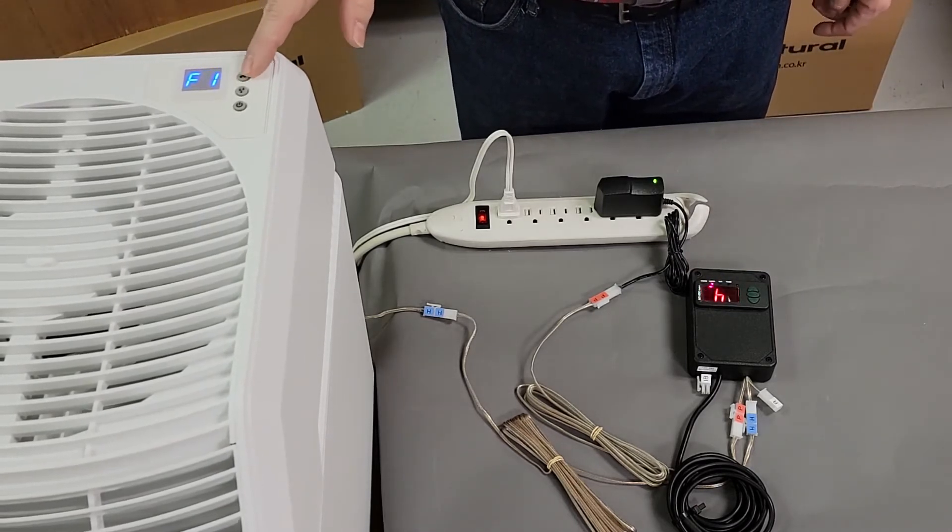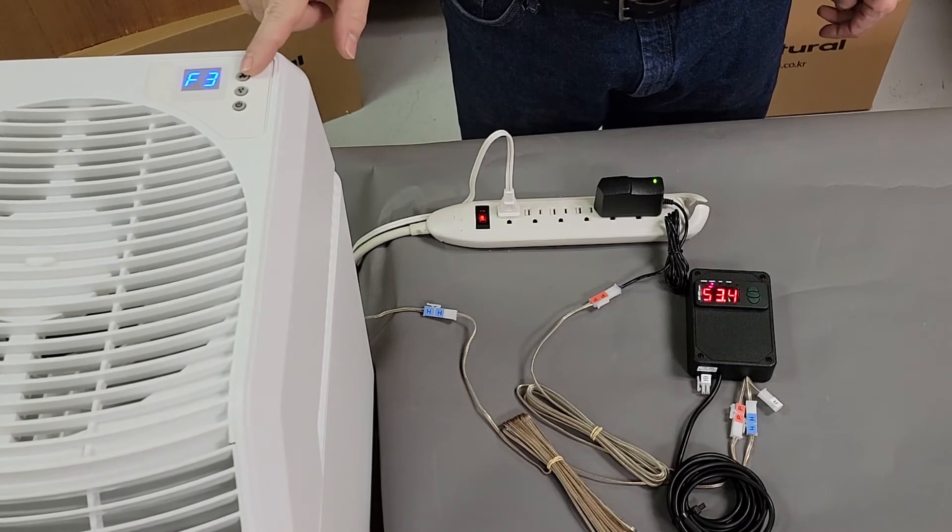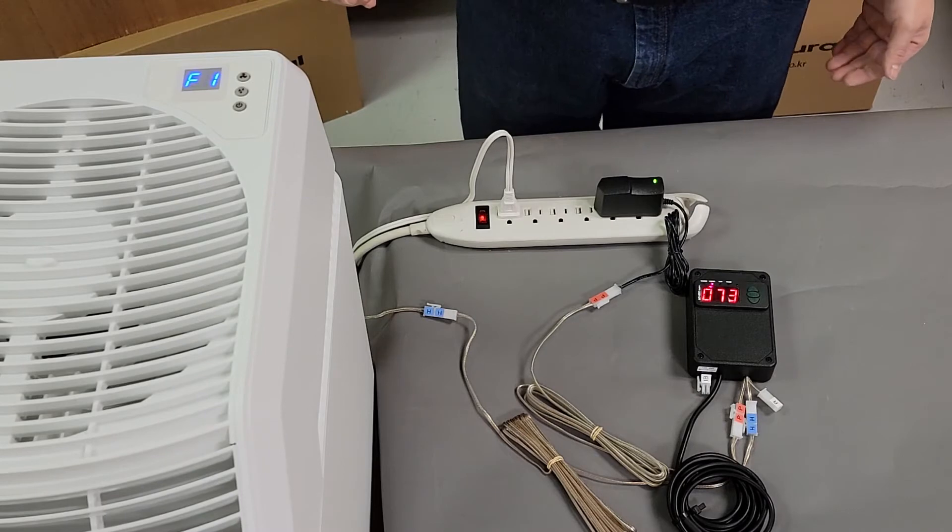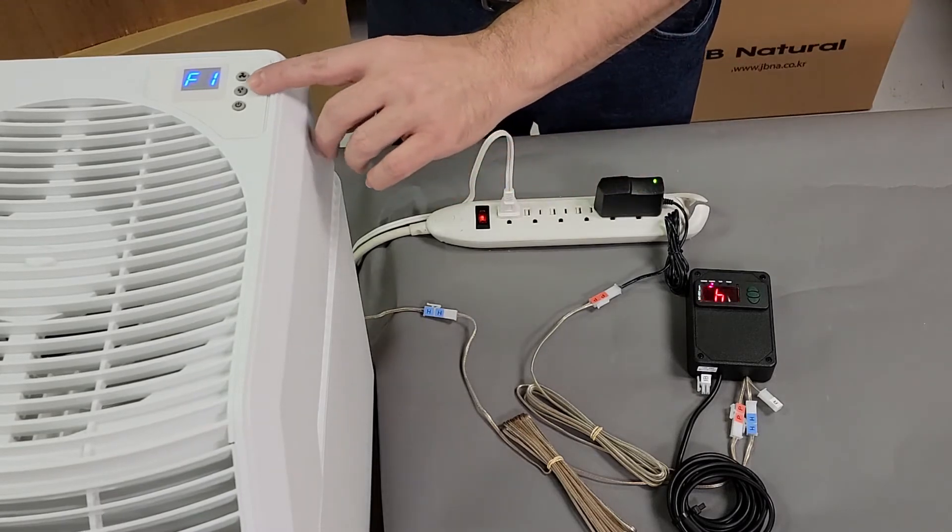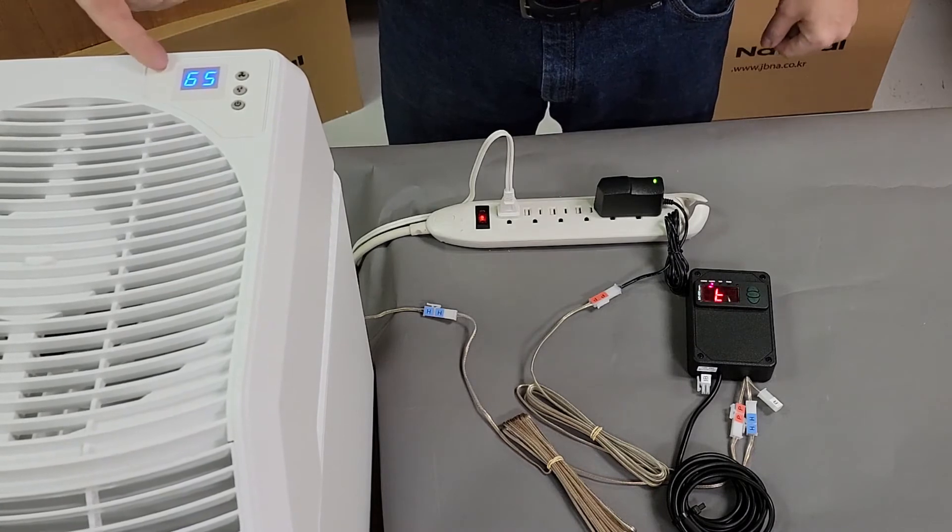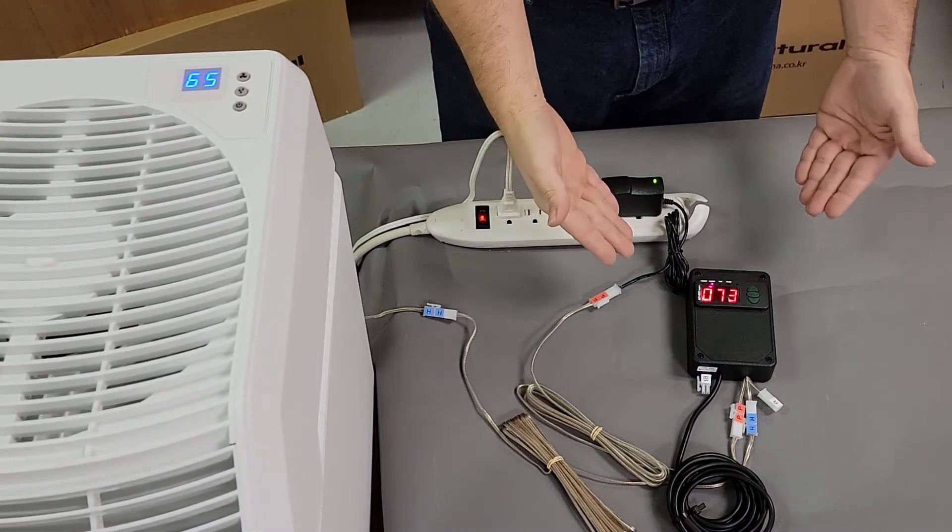There are three fan speeds with this unit, simply labeled F1, 2, and 3. Also, for this unit to work properly under the control of our control unit, the humidity must be set on 65 as shown here.